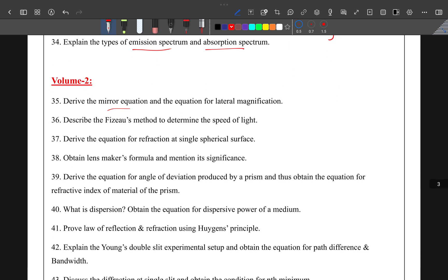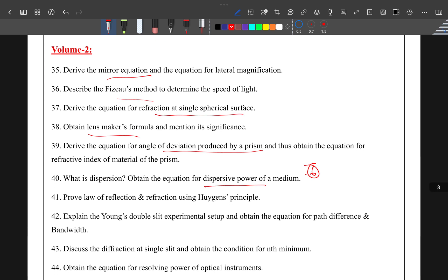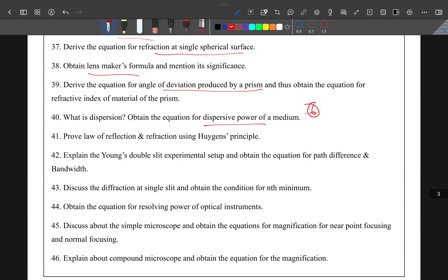Second volume: mirror equation, Fizeau's method, refraction at a single spherical surface, lens maker's formula, angle of deviation produced by prism, and dispersive power of prism. This is the sixth lesson.